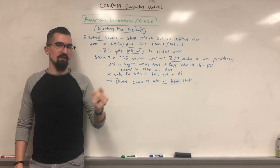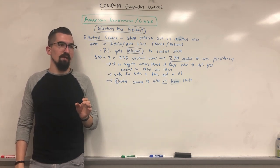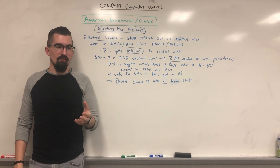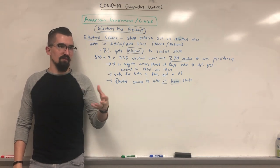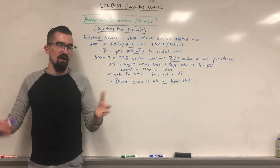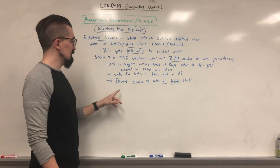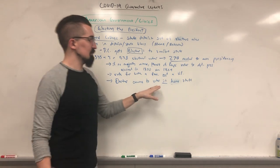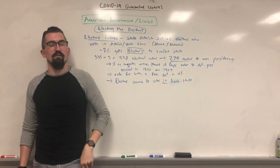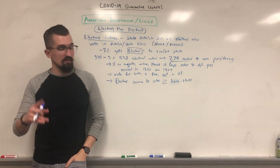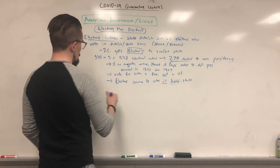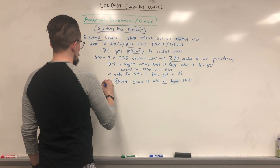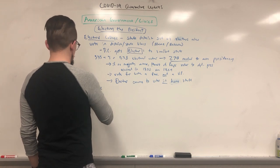They also didn't want electors being intimidated to vote a certain way. They wanted them to make their own decisions where they felt safe and were less likely to be bullied or pressured into voting for a particular candidate. So these electors stay within their home states and send their votes in a sealed envelope to be counted by the current vice president.